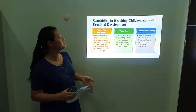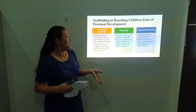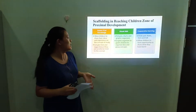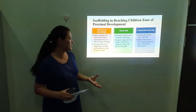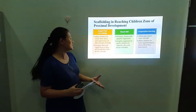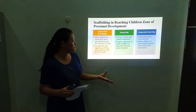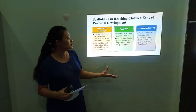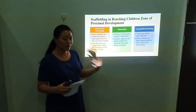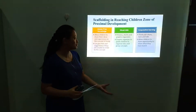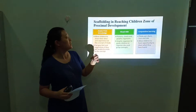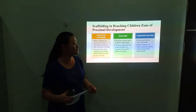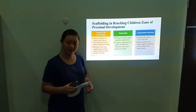Scaffolding enriches children's zone of proximal development. First, assess prior knowledge — allow the children to share their ideas and experiences on the concept being studied, and give hints and suggestions if they are unable to relate to the concept. We can also use visual aids such as pictures, charts, and graphic organizers to help children organize ideas and grasp concepts. For cooperative learning, we can use think-pair-share and turn-and-talk to allow children the opportunity to share what they have learned with their friends.